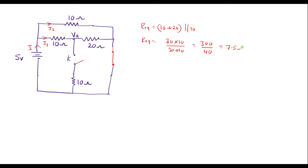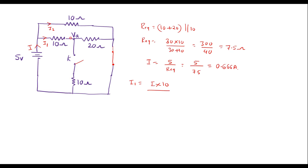R_equivalent equals 7.5 ohms. Now let me find the total current. Total current i equals V divided by R_equivalent, that is 5 divided by 7.5, which gives 0.666 amps. To find va(0-), we need to find current i1. Using the current divider, i1 equals the total current times the opposite resistor divided by the sum of resistors: 0.666 times 10 divided by 40, so i1 equals 0.1666 amps.